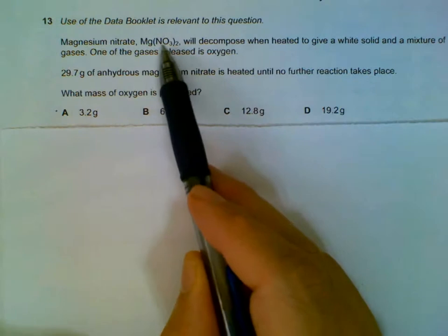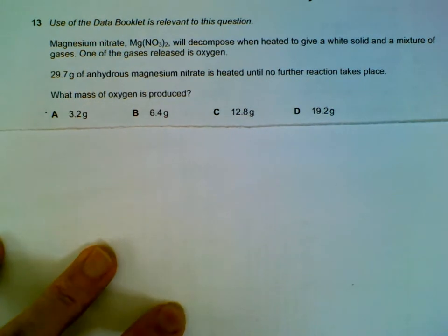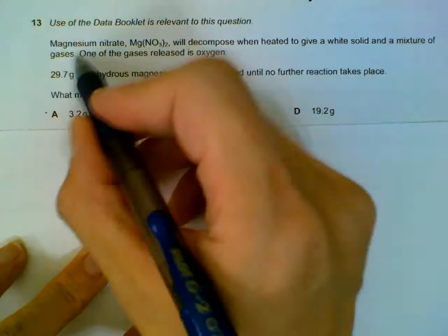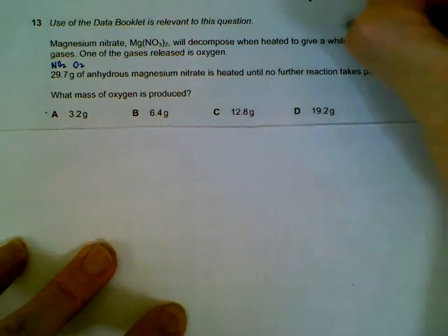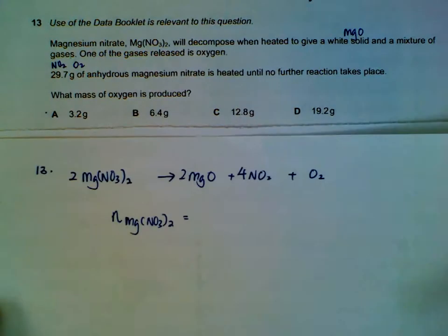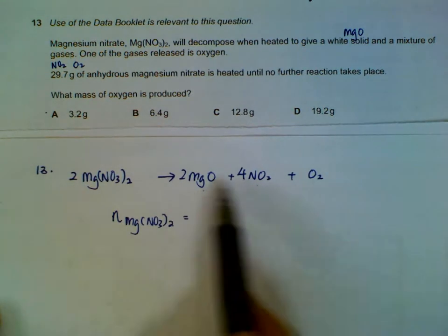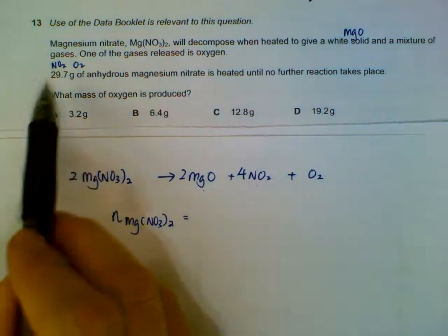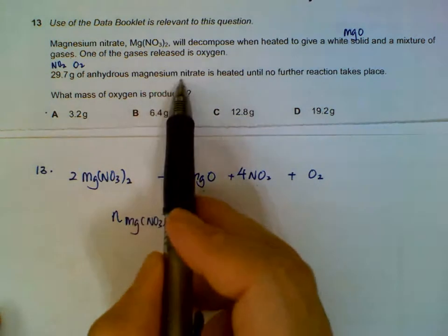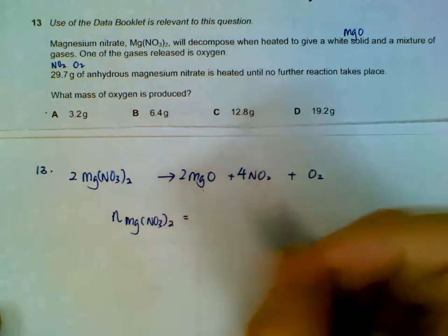Decomposition of Group 2 nitrates is quite a popular exam question. When Group 2 nitrates decompose, they give us the Group 2 oxide and a mixture of gases: nitrogen dioxide and oxygen gas. Once we form the equation and balance it, we can do the mole calculation. We have 29.7 grams of magnesium nitrate, so we can find the number of moles of magnesium nitrate.